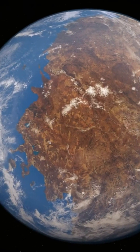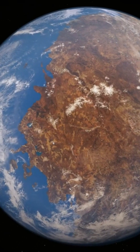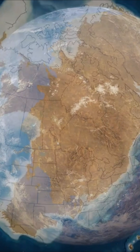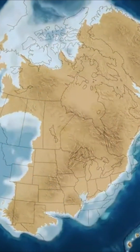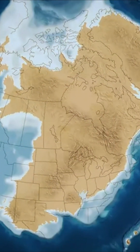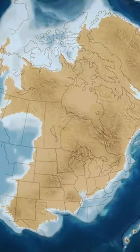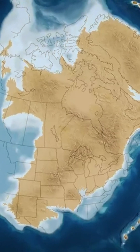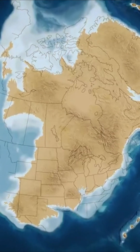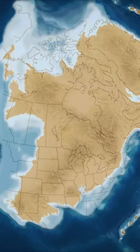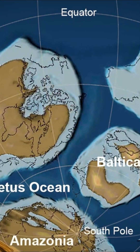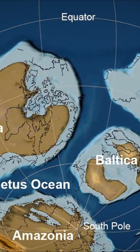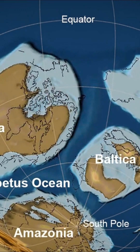Shortly before the Cambrian era, two new continents appeared. Laurentia, the larger of the two, forms much of the North America we know today, minus Florida, as well as Greenland and Scotland. The second, less important, corresponds to the Siberian shield.